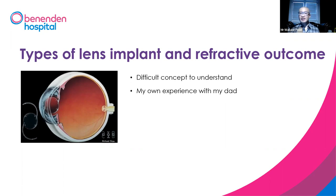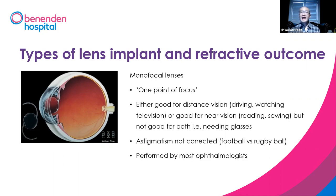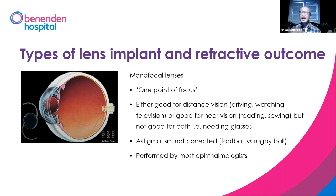The types of lens implants and refractive outcome is quite a difficult concept to understand. Roughly, you can think about two types of lenses. One is called the monofocal lens — mono meaning one point of focus. It's either good for distance vision, which is for driving and watching television, or it's only good for near vision, such as reading or sewing — but not both, meaning you will still need glasses. If you also have astigmatism — where the cornea is shaped more like a rugby ball than a football — this will not be corrected with monofocal lenses. You will probably need glasses for both distance and near. This procedure is done by most ophthalmologists.